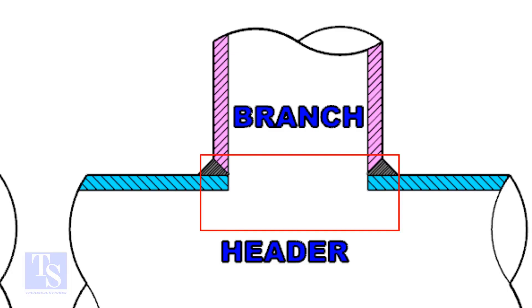And on the header pipe, a hole is there. The diameter of the hole on the header pipe is the same as the inside diameter of the branch pipe.